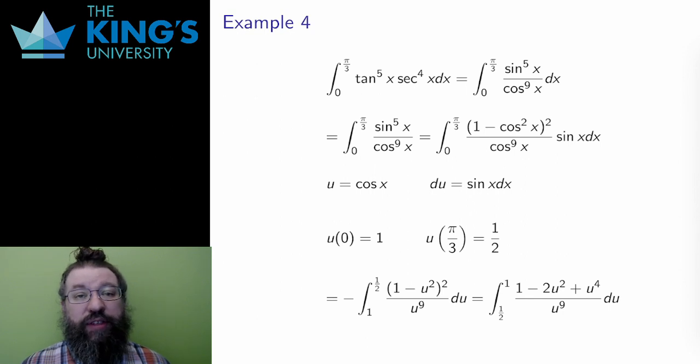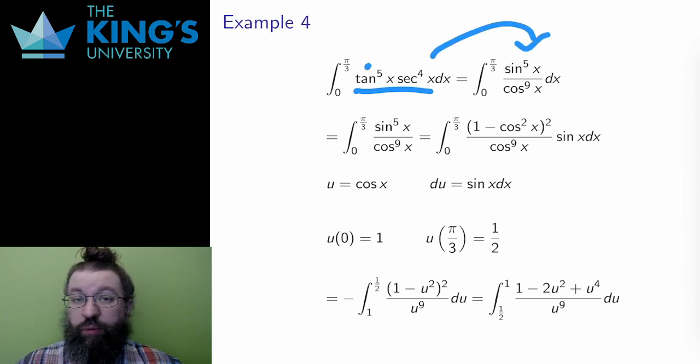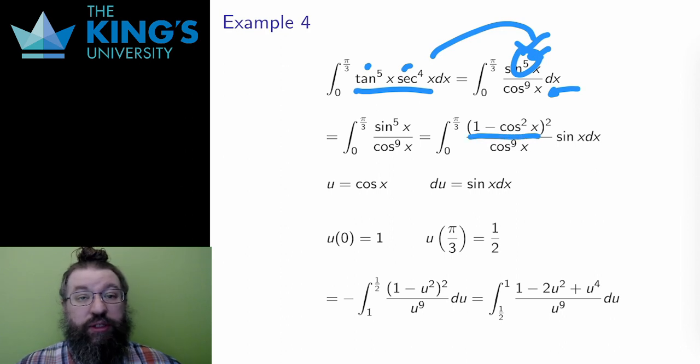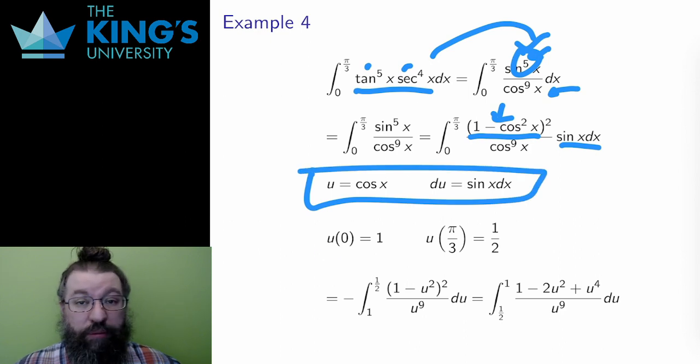Here is that same example once more. I want to show you that, in some cases, two different methods can both work. Instead of using the tangent substitution, I could also change everything into sines and cosines. Tangent is sine over cosine, and secant is 1 over cosine, so changing everything into sines and cosines gives sine to the 5 over cosine to the 9. There is an odd power of sine here, which means a cosine substitution will work. So I pull out sine to the 4, leaving one sine left over. I change sine to the 4 into sine squared squared, which is 1 minus cos squared squared. Then I can use the cosine substitution. There are bounds here, so I also change the bounds using the cosine.